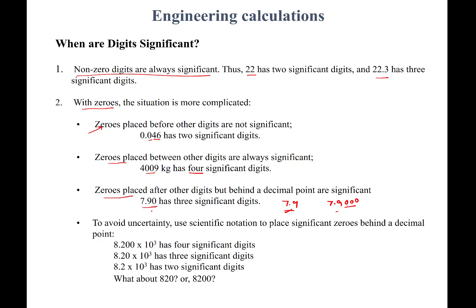To avoid ambiguity about trailing zeros, use scientific notation to indicate how many significant figures you have. For example: 8.200 × 10³ has four significant figures; 8.20 × 10³ has three; 8.2 × 10³ has only two. Writing 820 without scientific notation is ambiguous — we don't know if the trailing zero is significant. If it is, write 8.20 × 10². Similarly, 8200 is ambiguous: if both zeros are significant, write 8.200 × 10³; if only one zero is significant, write 8.20 × 10³.